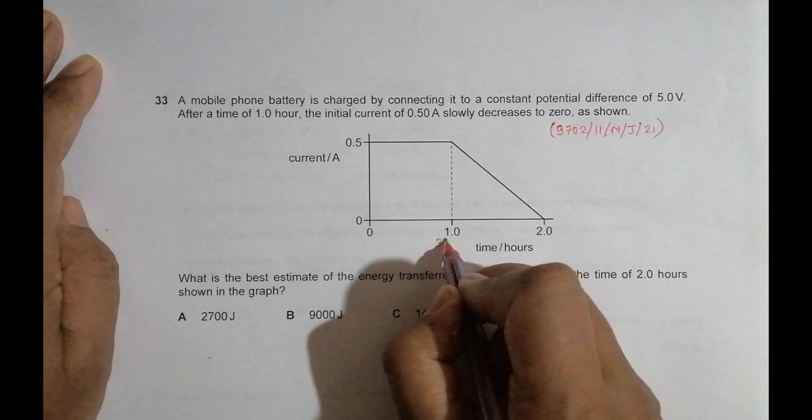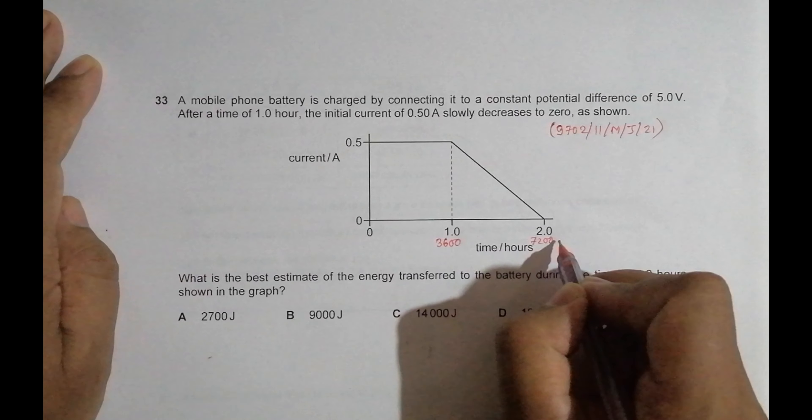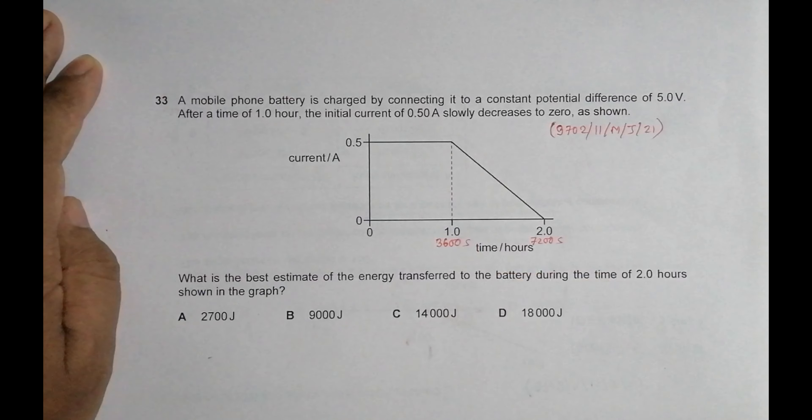let me write it here: this is 3600 seconds and this is 7200 seconds. What's the best estimate of the energy transferred to the battery during the time of 2.0 hours? So we have to find the energy.